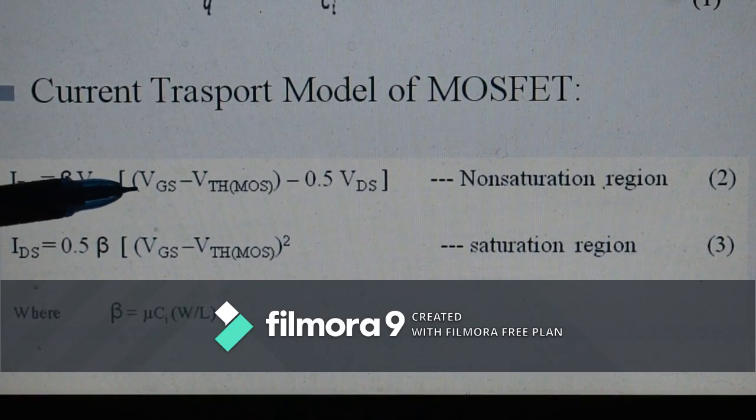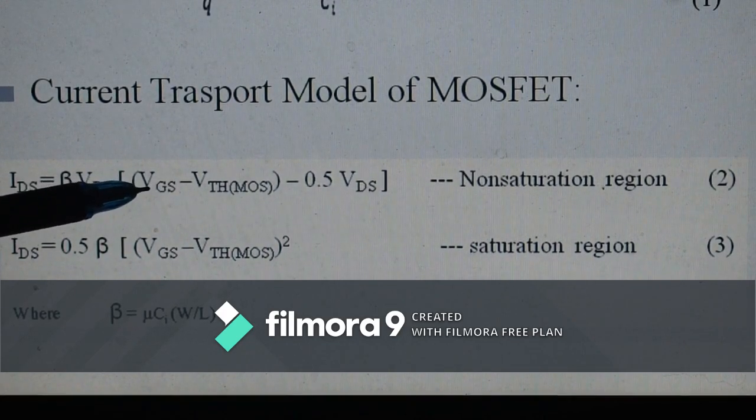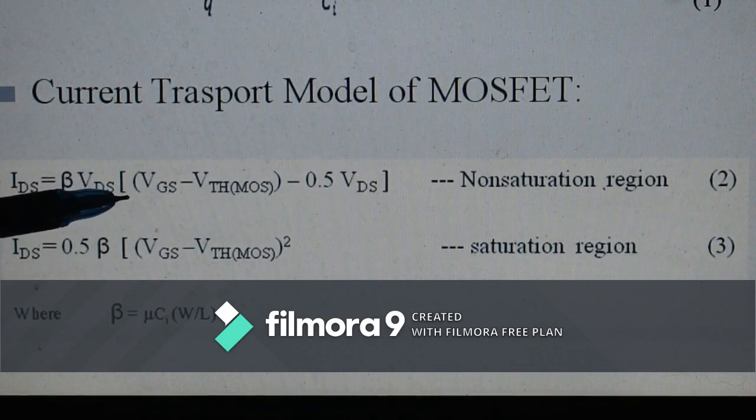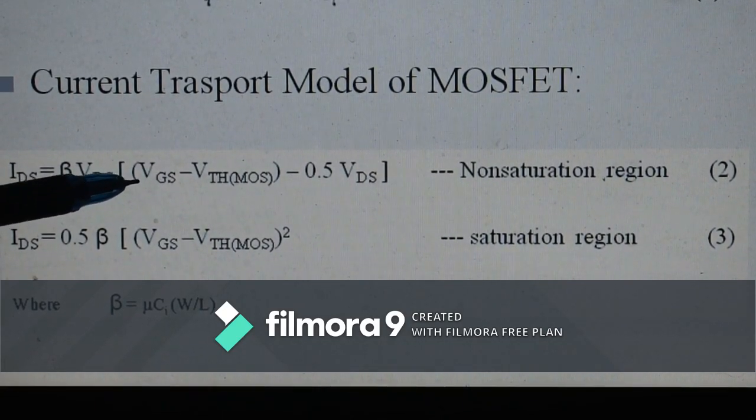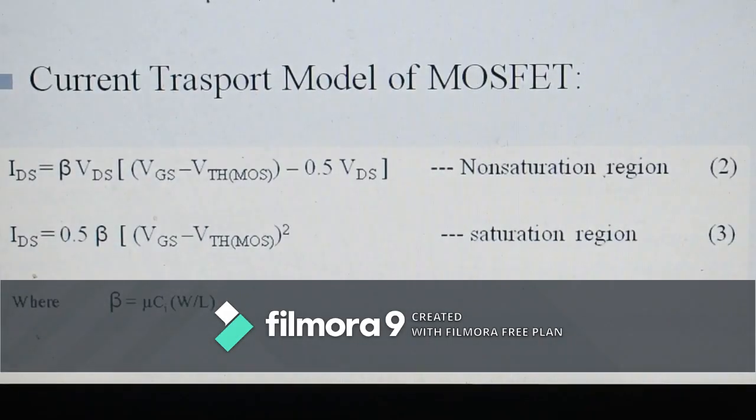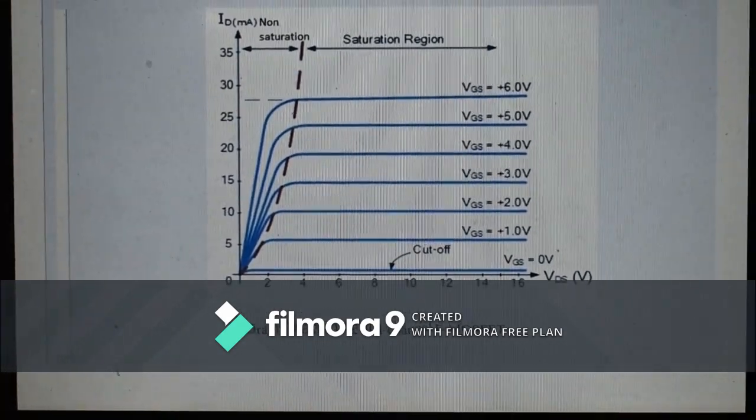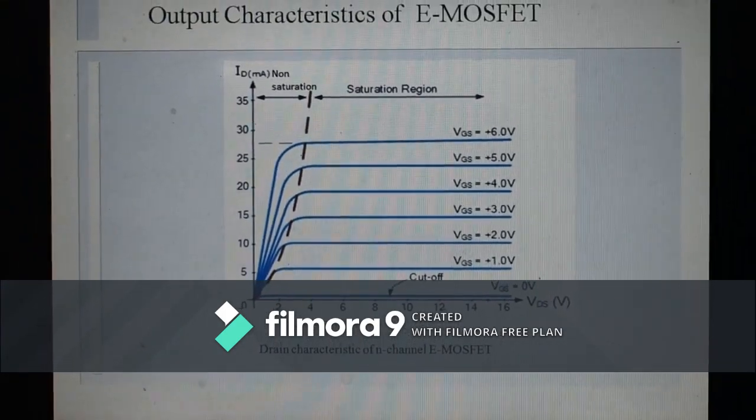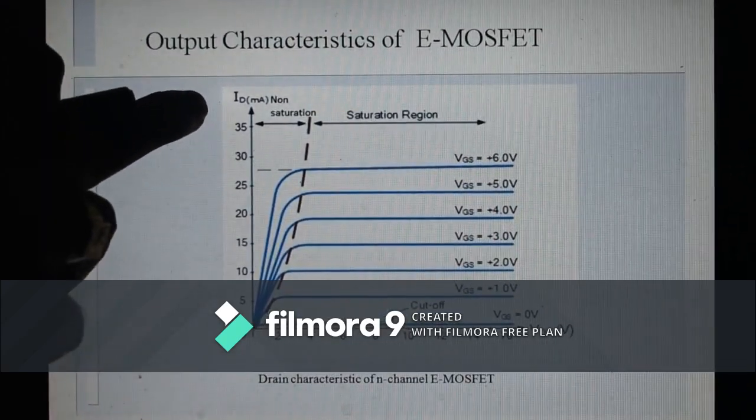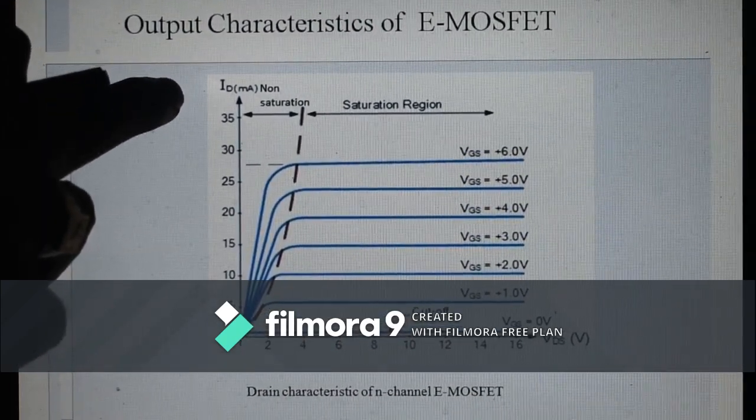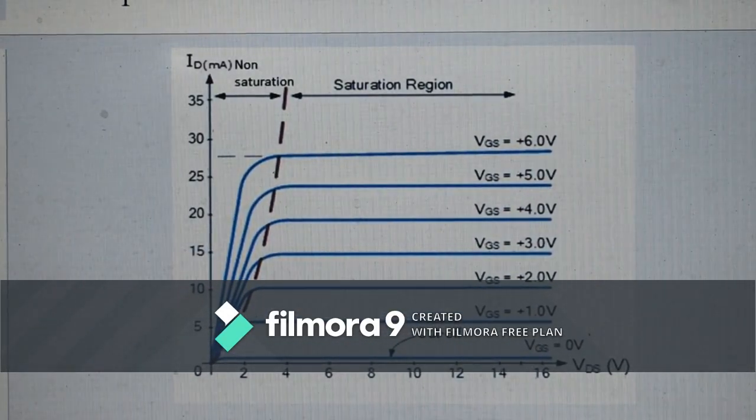Since only VGS is the input parameter, IDS versus VDS curve for MOSFET is recorded as a function of VGS as shown here, which is the output characteristics. Here, VDS is the output and IDS or ID is the drain current. All curves have been run as a function of VGS.